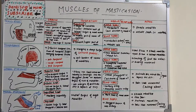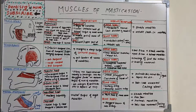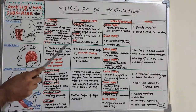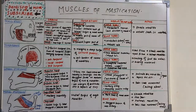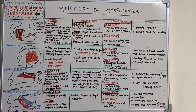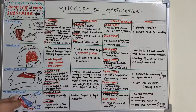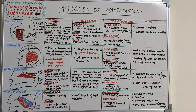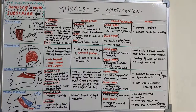The temporalis is inserted into the margins and deep surfaces of the coronoid process and the anterior border of the ramus of the mandible. The nerve supply is from the deep temporal branches, which are branches of the anterior division of the mandibular nerve. Blood supply is from the superficial temporal artery, a branch of the maxillary artery, and venous drainage is from the superficial and medial temporal veins.